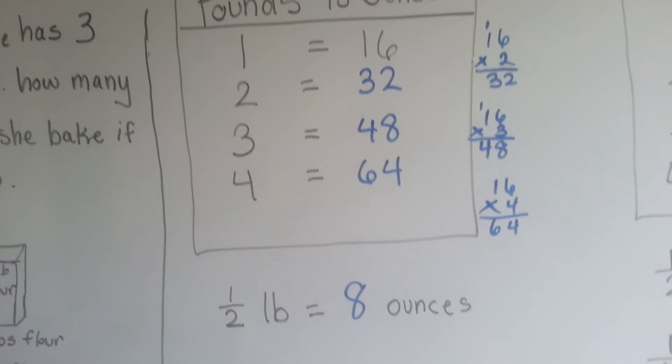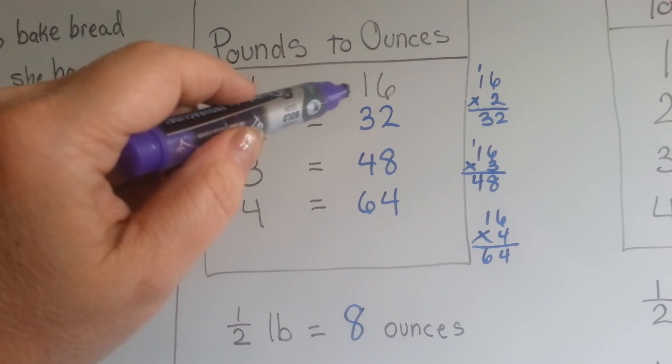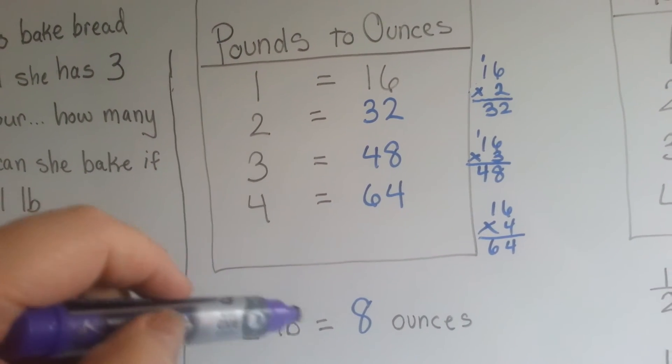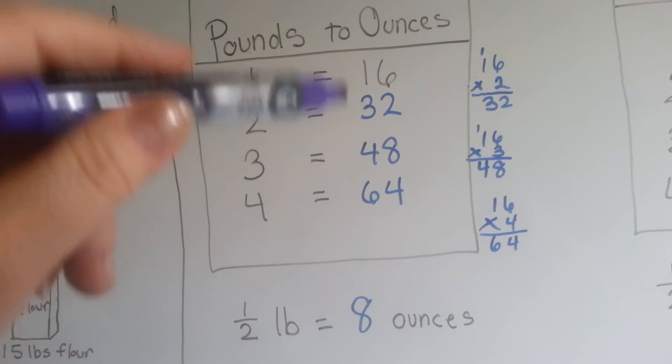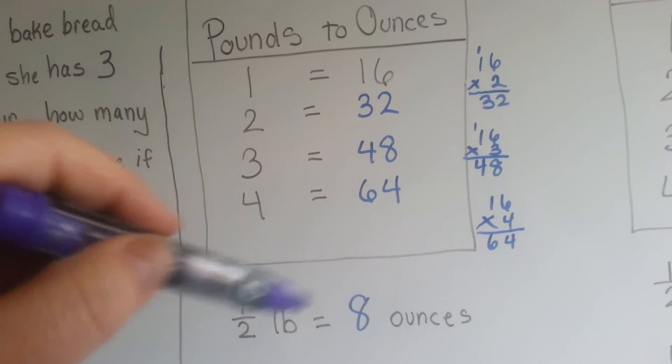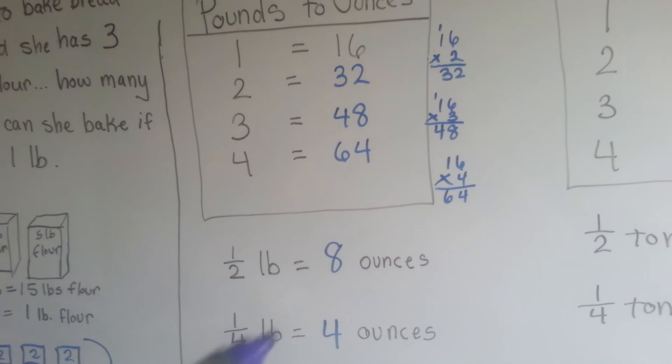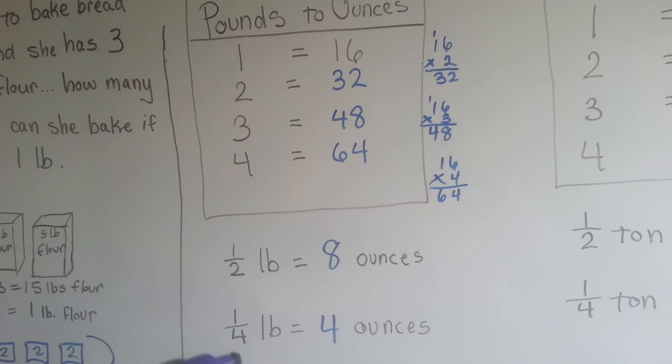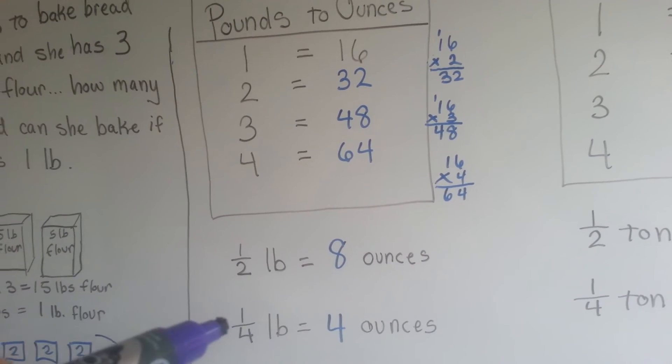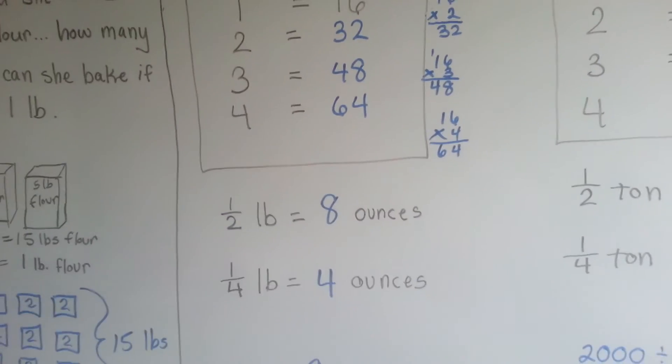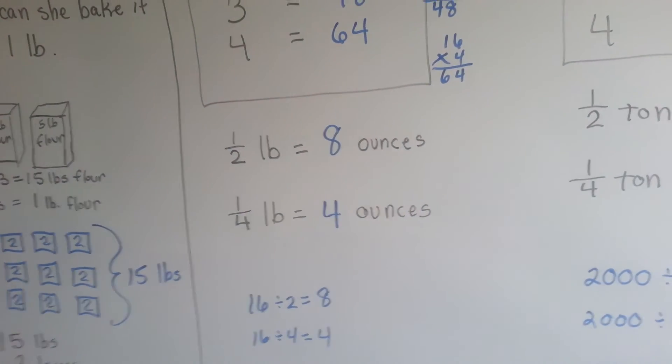What if we wanted to find a half a pound? Well, then we would divide the sixteen by two. Sixteen divided by two is eight. Because eight and eight make sixteen, a half a pound would be eight ounces. What about a fourth of a pound? What's one-fourth of sixteen? Four times four is sixteen, so four ounces would be a fourth of a pound. Just do division.